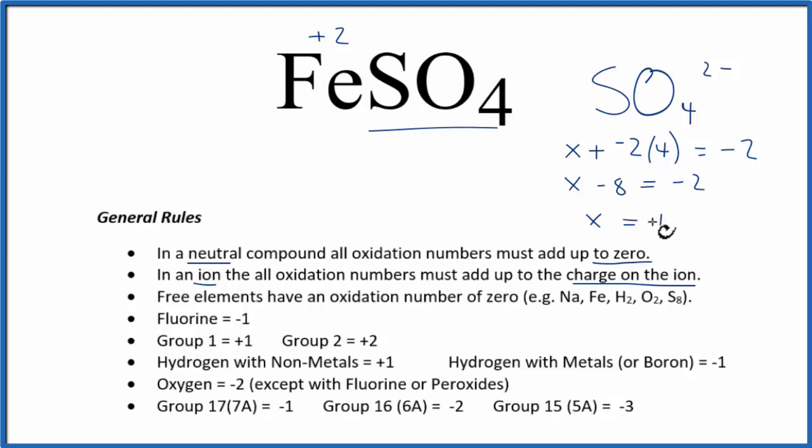x is going to have to equal plus six. So the oxidation number on the sulfur, that's plus six. And then we knew each oxygen had an oxidation number of minus two.